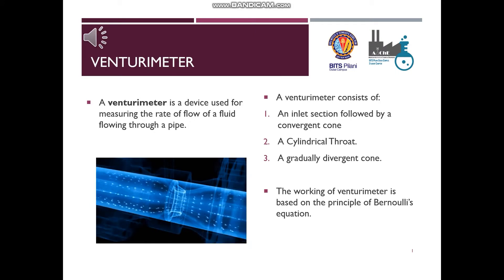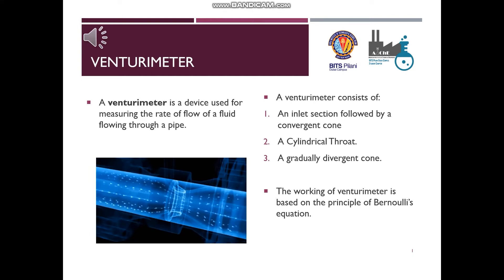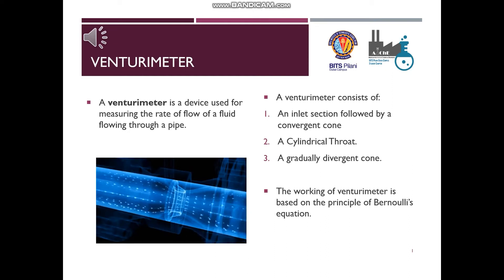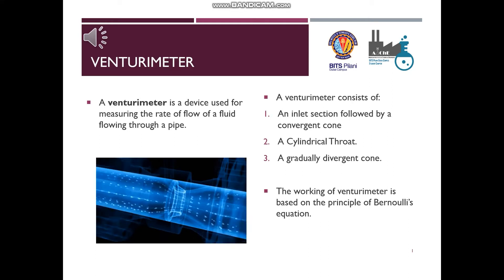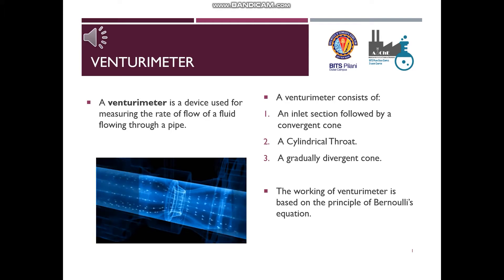The inlet section of the venturimeter is of the same diameter as that of the pipe, which is followed by a convergent cone. The convergent cone is a short pipe which tapers from the original size of the pipe to that of the throat. The throat is a short parallel-sided tube having its cross-sectional area smaller than that of the pipe. The divergent cone is a gradually diverging pipe with its cross-sectional area increasing from that of the throat to the original size of the pipe.